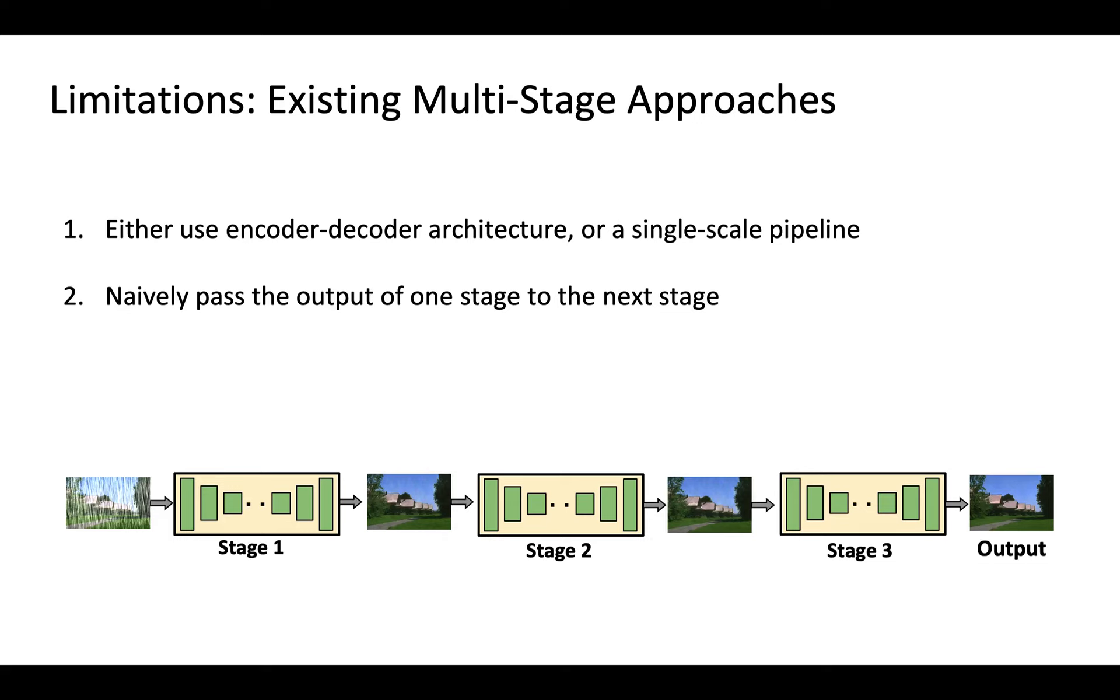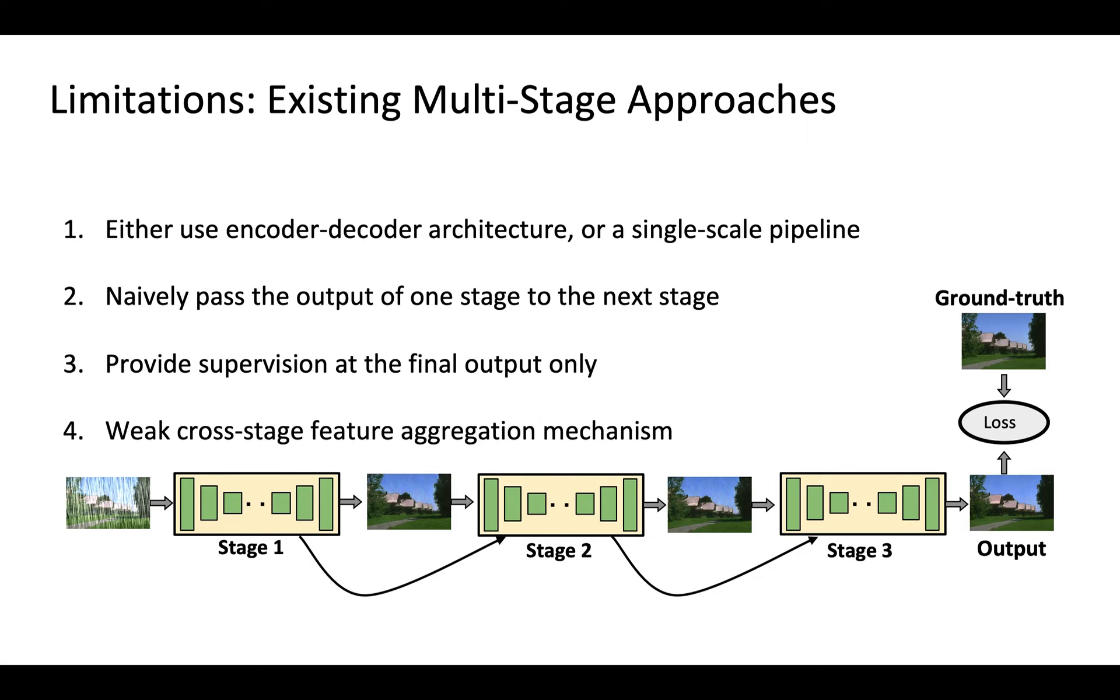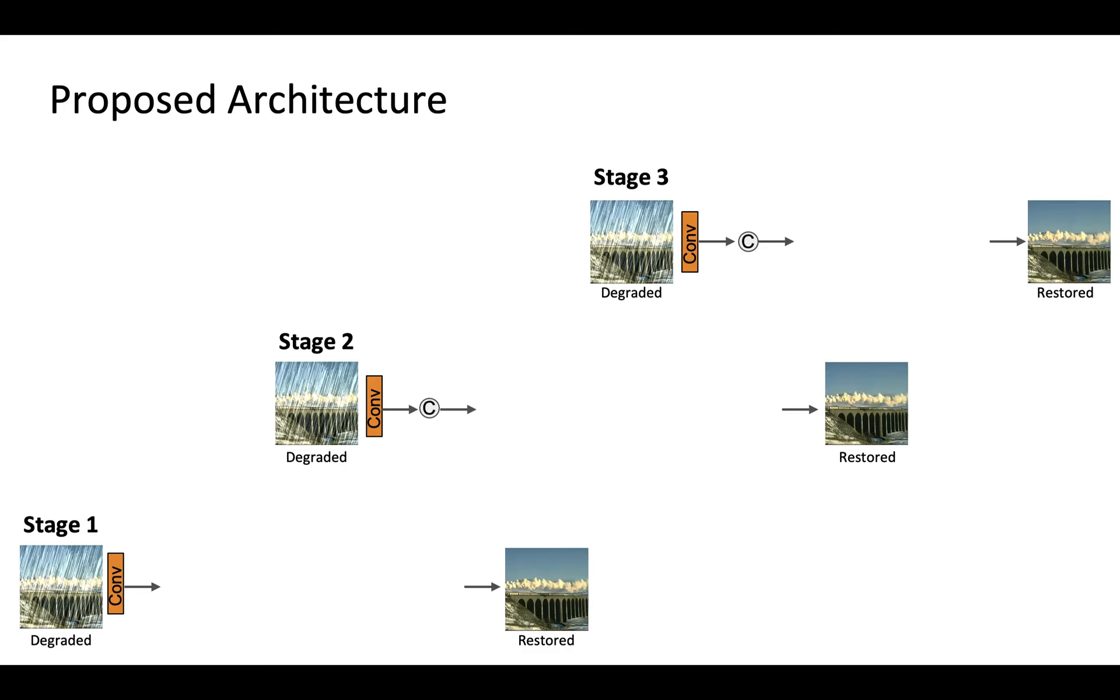Existing approaches often naively pass the output of one stage to the next stage and provide supervision at the final output only or employ a weak cross-stage feature aggregation mechanism. To alleviate these issues, we propose a multi-stage architecture with several key components.